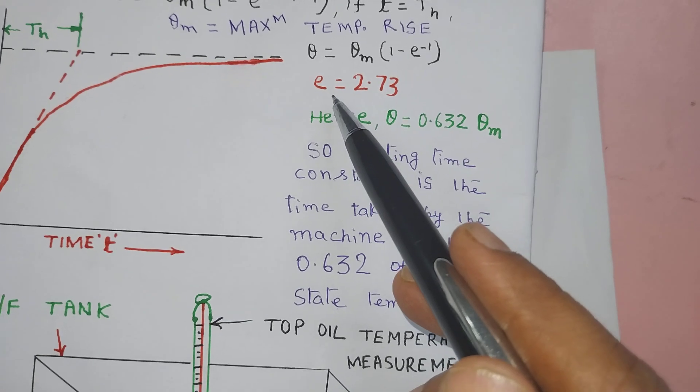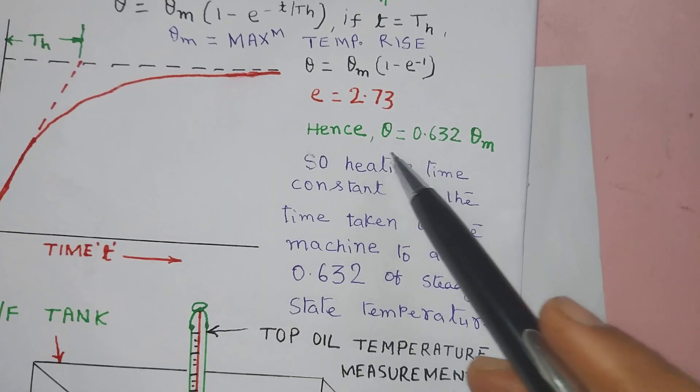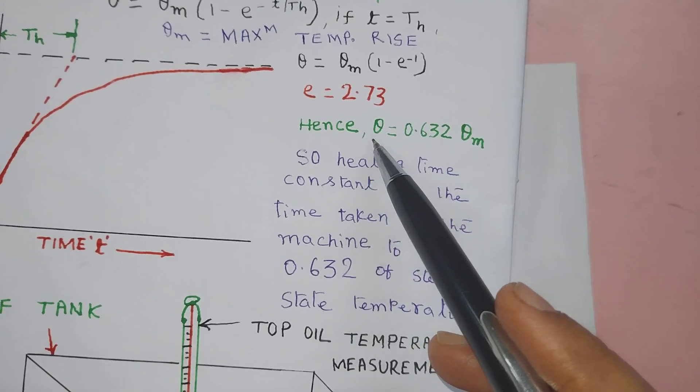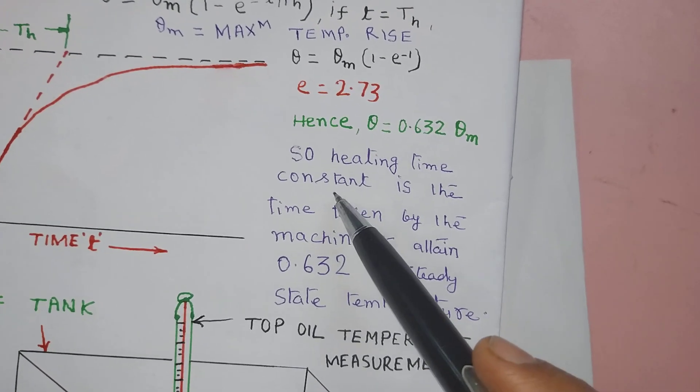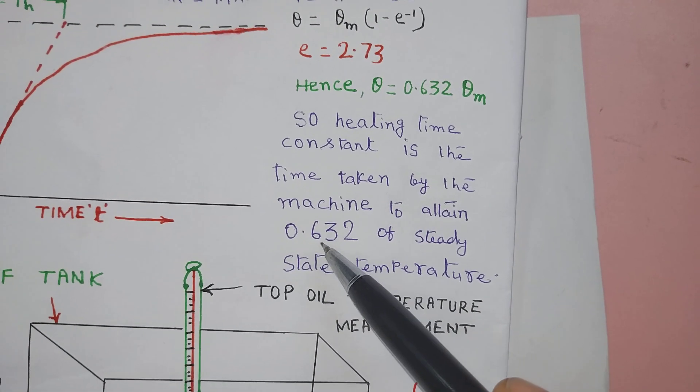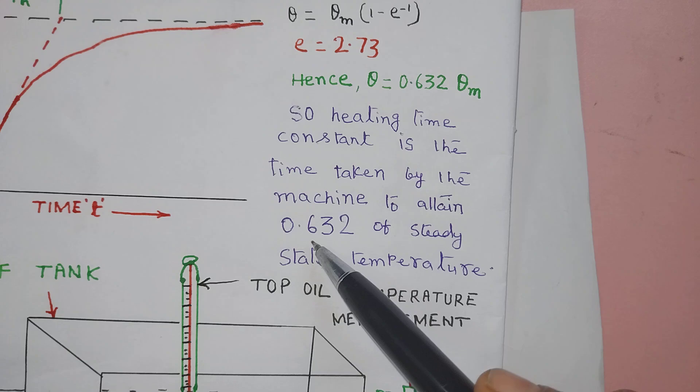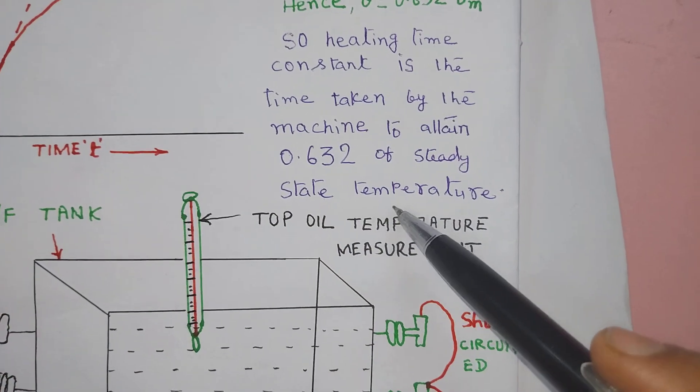Value of exponential is 2.73. So here theta equals 0.632 theta m. So heating time constant is the time taken by the machine to attain 0.632 of steady state temperature.